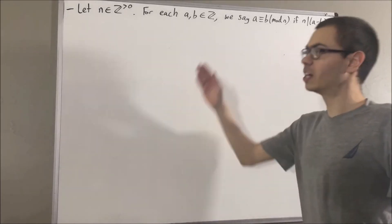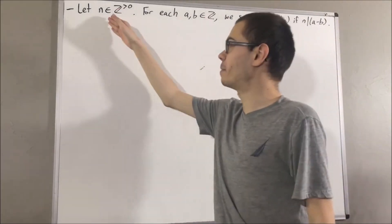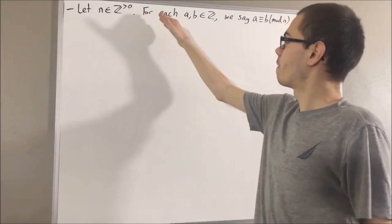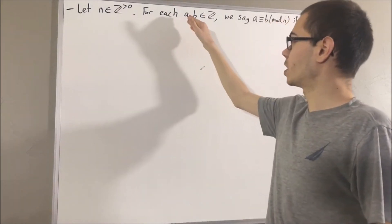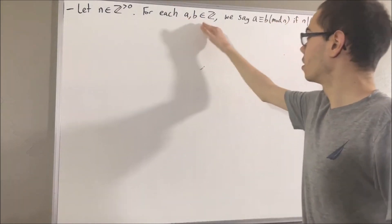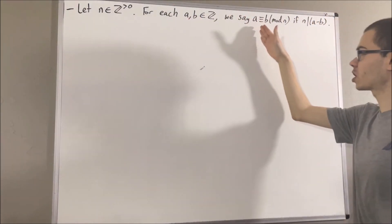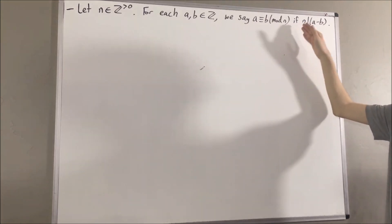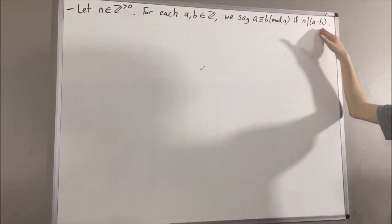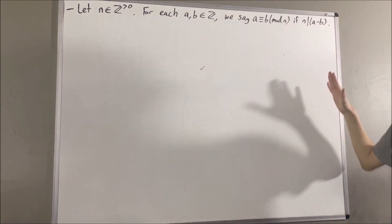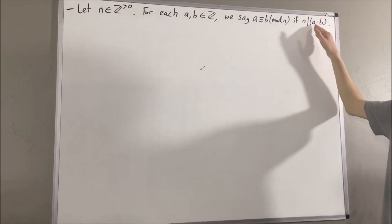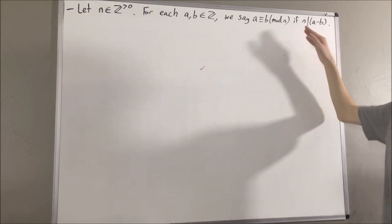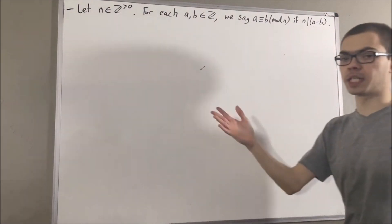In this video, let n be a positive integer. For each two integers a and b, we say a is congruent to b modulo n if n divides a minus b. In other words, a minus b is equal to n times some integer.